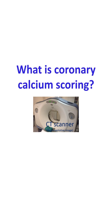Coronary calcium scoring is done from a plain multi-detector computer tomographic scan. MDCT produces images of coronary arteries in multiple thin slices. Calcium deposits in plaques within the coronary arteries can be found from these images. Calcium deposits occur within atherosclerotic lesions inside the coronary arteries. Some of these plaques can rupture later and lead to clot formation and total occlusion, causing acute myocardial infarction.